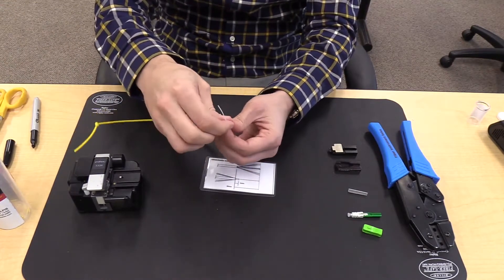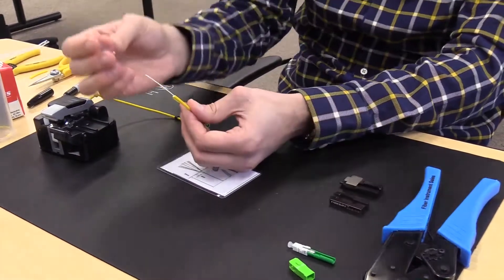Separate the Kevlar back from the 900-micron buffer and slide the mini-sleeve over the Kevlar.